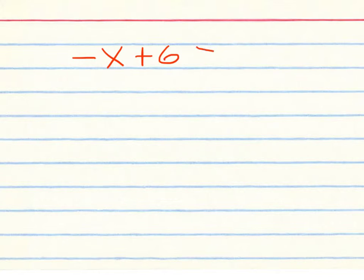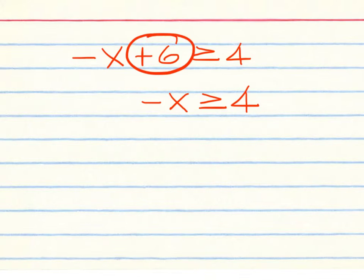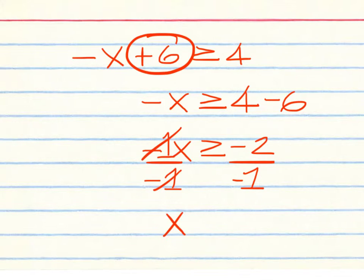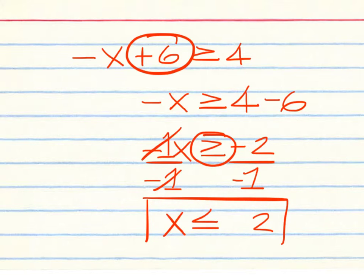Next: negative x plus 6 greater than or equal to 4. Keep your negative x on the left and 4 on the right. Move the plus 6 and make it minus 6 — negative x minus 6 gives negative 2 on the right. You have a negative 1 beside the x, so divide both sides by negative 1. The inequality sign must flip since you divided by a negative, giving x less than or equal to 2.